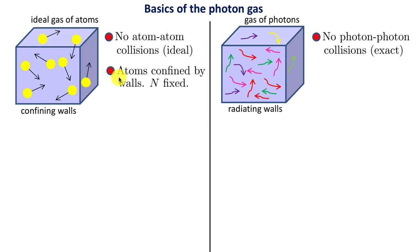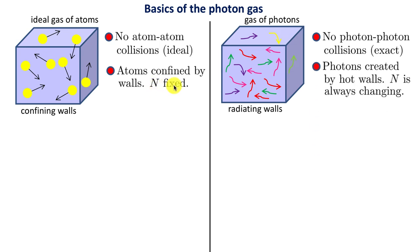A key difference: in an ideal gas of atoms, the number of atoms N is fixed. In a photon gas, photons are created by the hot walls — vibrating and colliding electrons are accelerating charges that radiate photons. As temperature increases, the number of photons inside increases. Even at constant temperature, N fluctuates, though the deviations from the average are small.